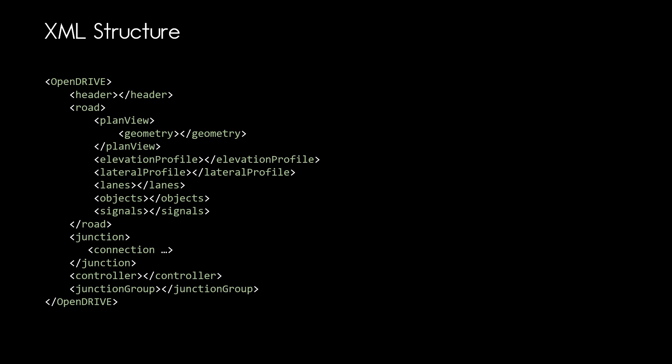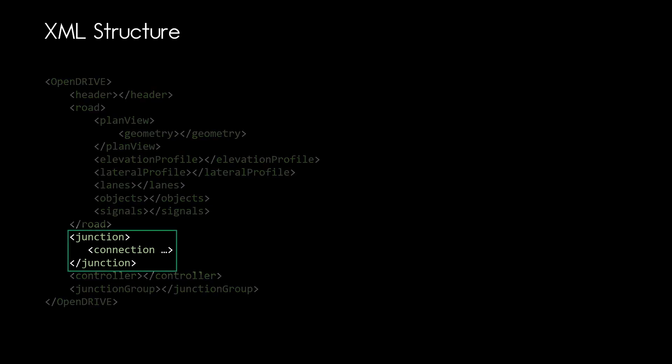This is the high level XML structure of OpenDrive. Check out my video about what is OpenDrive where I am explaining what each element in the structure is for. Link in the video description. The junction is defined directly after our road definitions and it contains all the connections we need to form a junction.